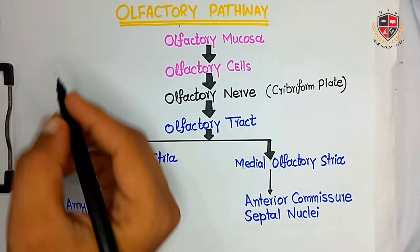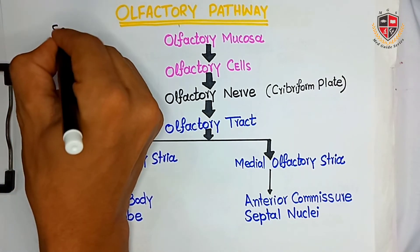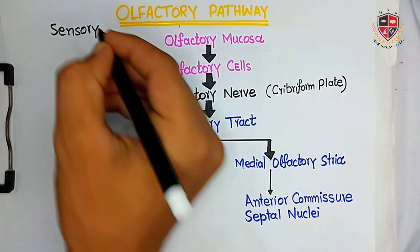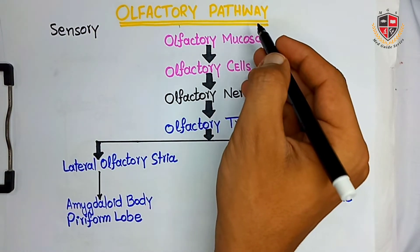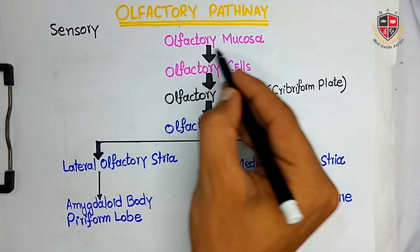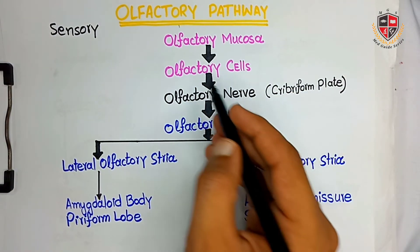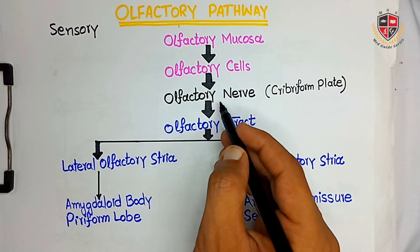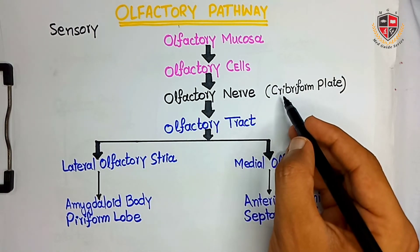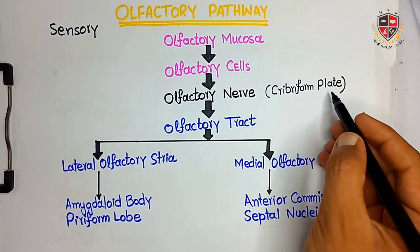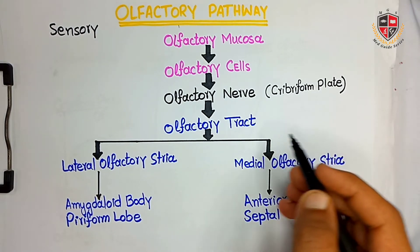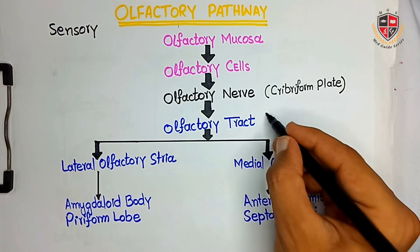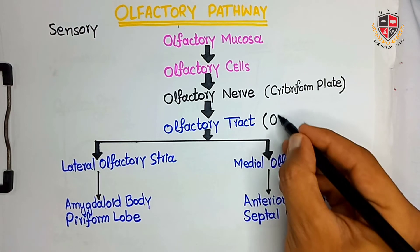The olfactory nerve is a purely sensory nerve. The olfactory pathway starts from the olfactory mucosa, where there are olfactory cells. The olfactory nerve passes through the foramina in the cribriform plate of the ethmoid bone and forms the olfactory tract within the olfactory bulb.